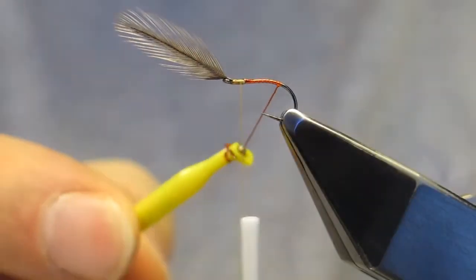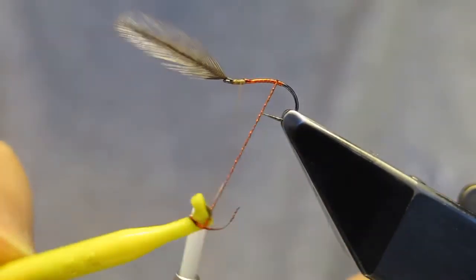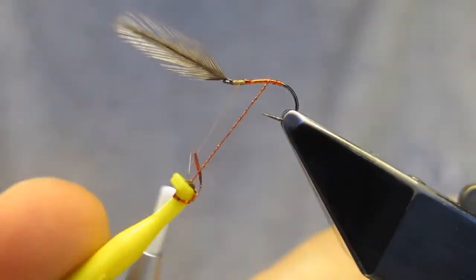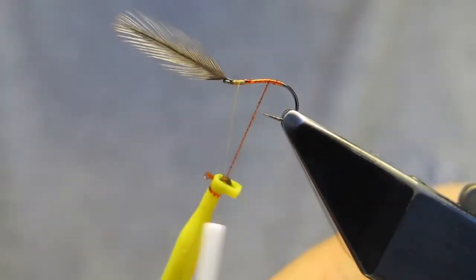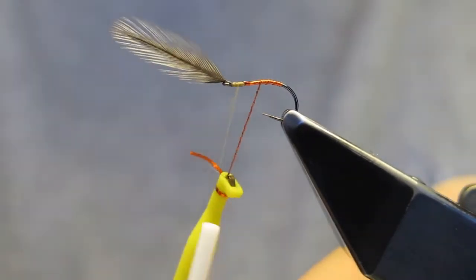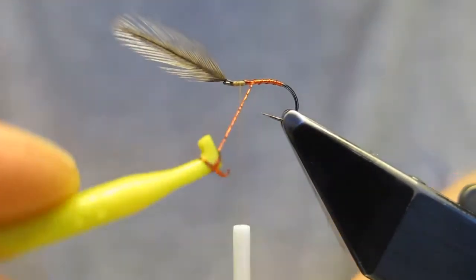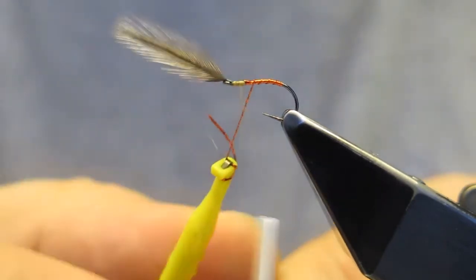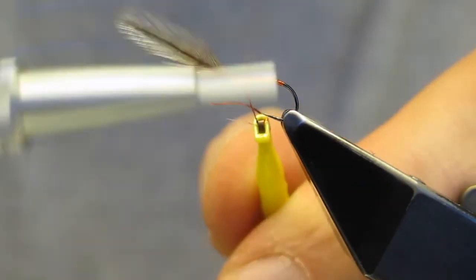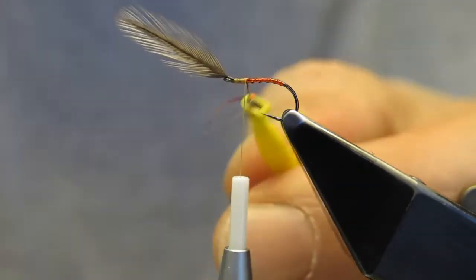And we can start to wrap in an even, evenly spaced ribbing. And tie it off.